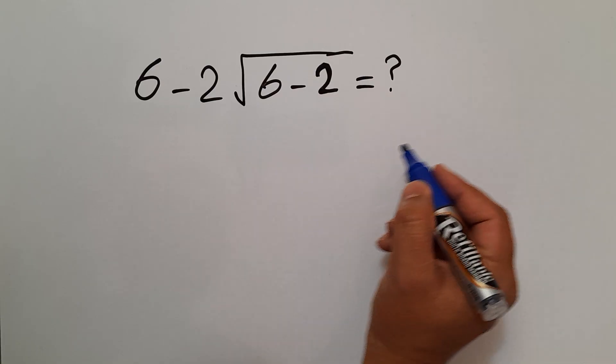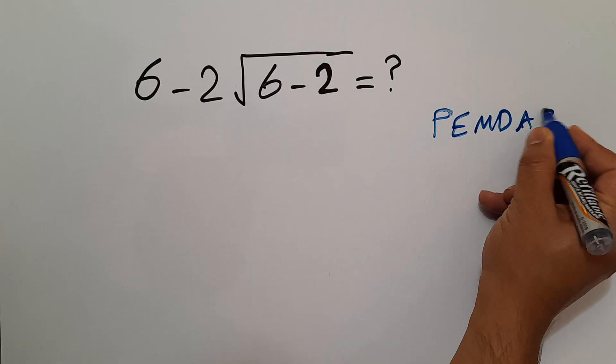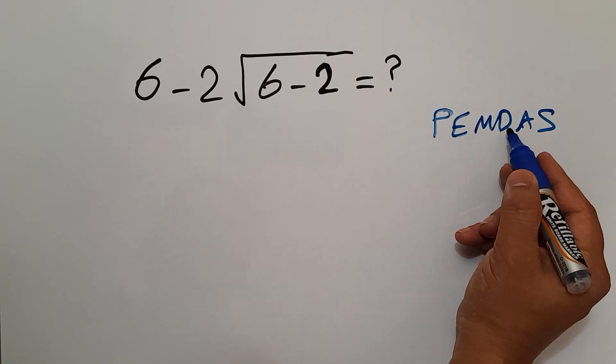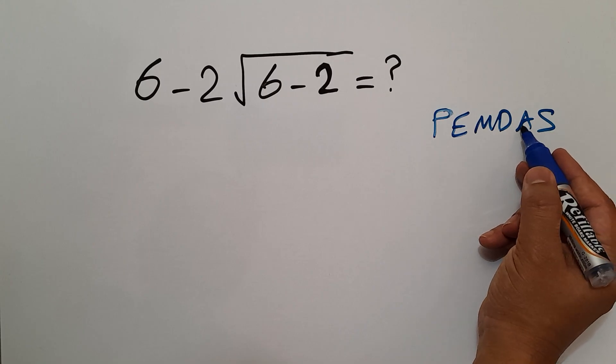According to the order of operations, which is PEMDAS, P stands for parentheses, E stands for exponents, M and D stands for multiplication and division, and A and S stands for addition and subtraction.